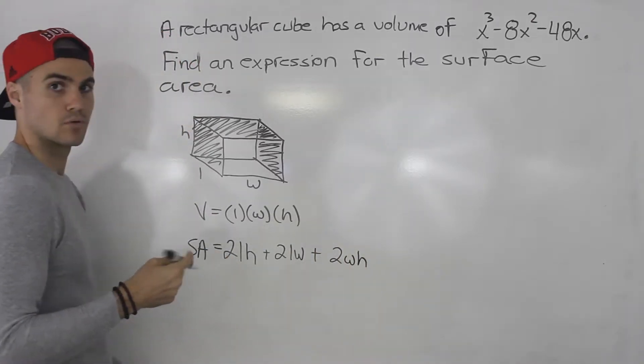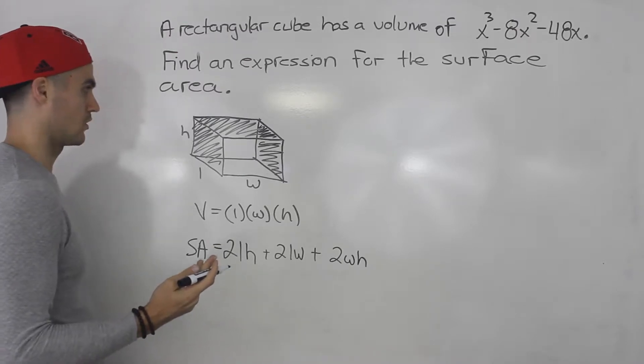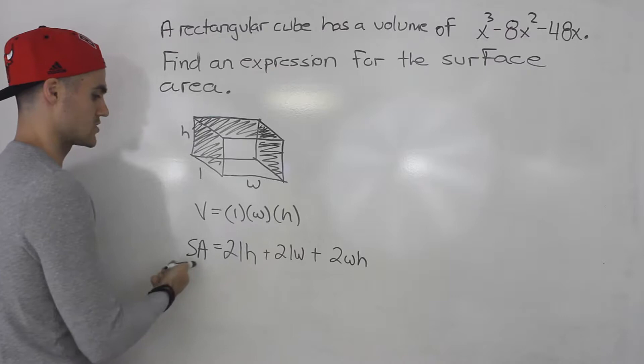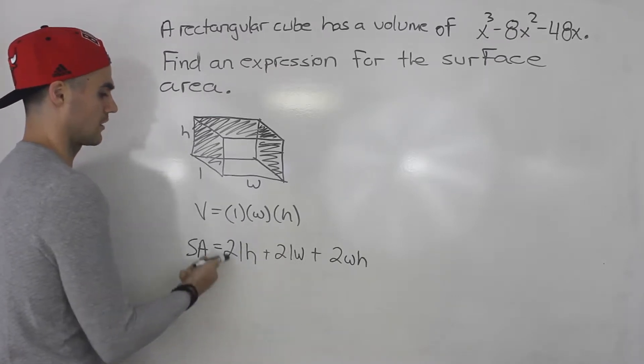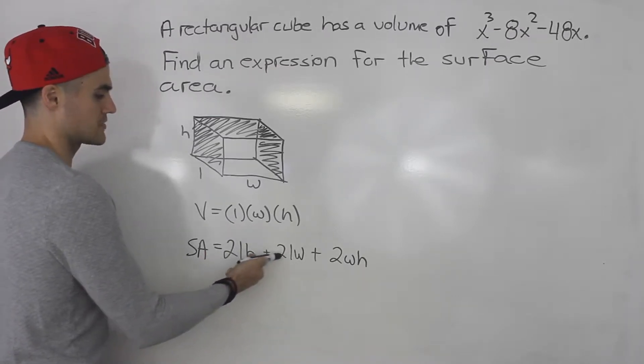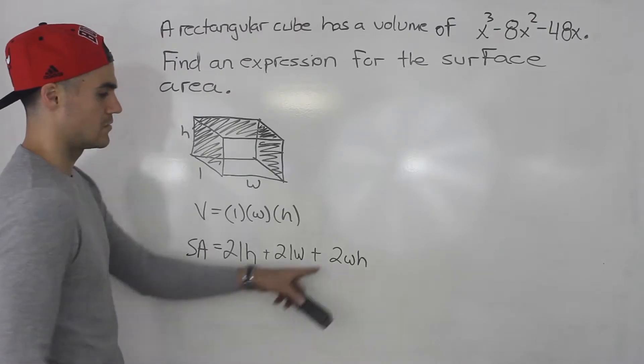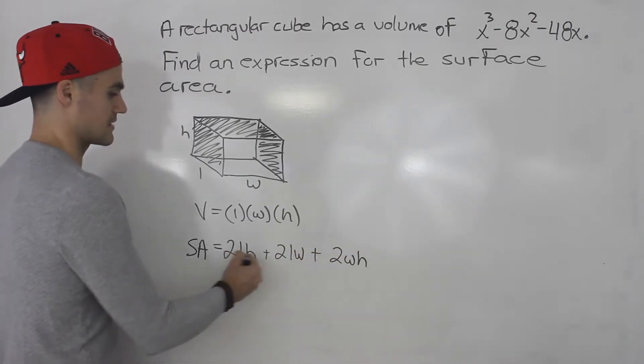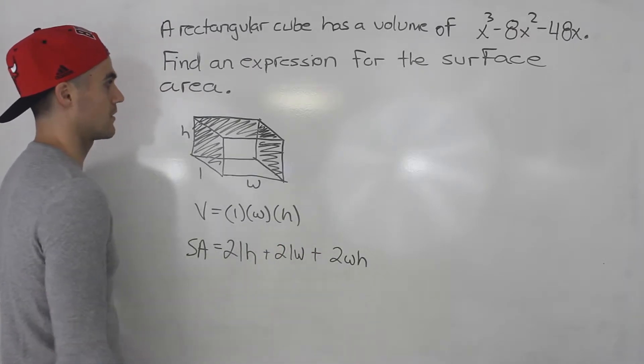So just a little review for a cube how it works. Volume is length times width times height. Surface area is this formula here: two times length times height plus two times length times width plus two times width times height. And notice that this is six faces here that we are adding.